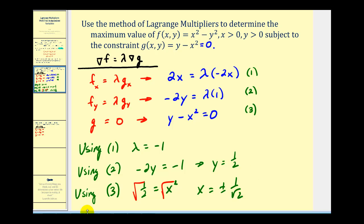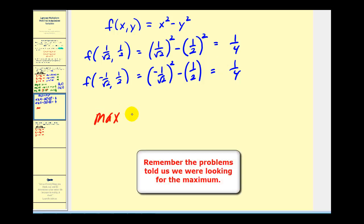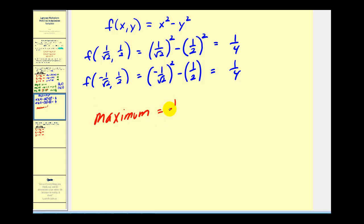This tells us we have two points to consider to determine the maximum value of this function based upon the constraint. One point is (1/√2, 1/2) and the second point is (−1/√2, 1/2). Evaluating the function at the first point gives 1/2 minus 1/4, which is 1/4. At the second point we get the same function value: 1/2 minus 1/4 equals 1/4. So the maximum function value based upon the given function and constraint is 1/4.